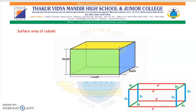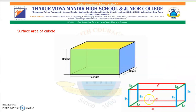Now, see the surface area of a cuboid. In this cuboid, you can observe that opposite faces are the same in shape. The front and back are both rectangular in shape, both side faces are square in shape, and the top and bottom are rectangular in shape.